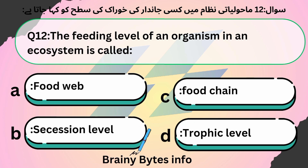The feeding level of an organism in an ecosystem is called — option D — trophic level.